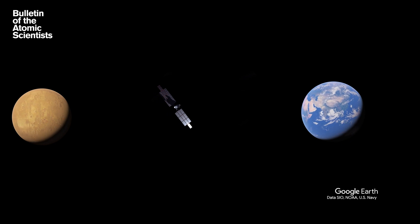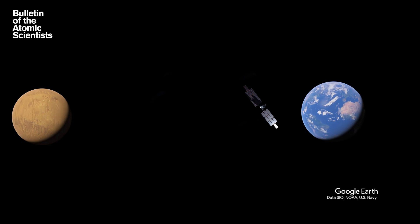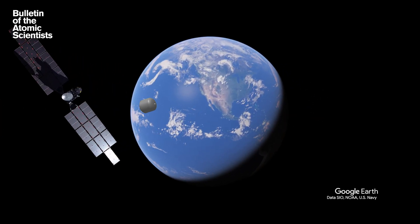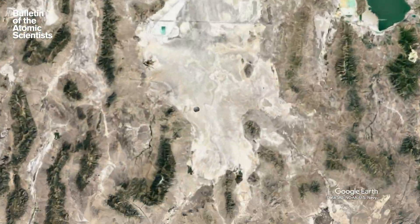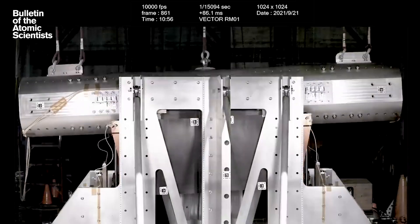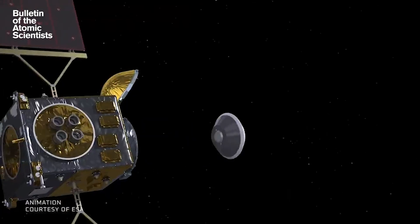For the Mars sample return mission, those final moments present the greatest risk. The sample container has to land without a parachute in the desert near where this video began, in a remote part of the Utah Test and Training Range 80 miles west of Salt Lake City. NASA is confident it can execute this elaborate plan without accidentally releasing any samples. But getting the samples here is just part of the challenge.